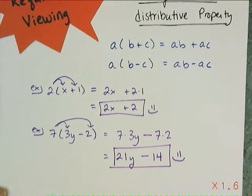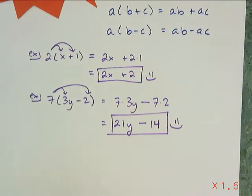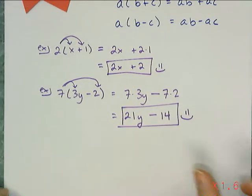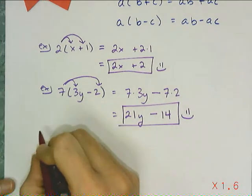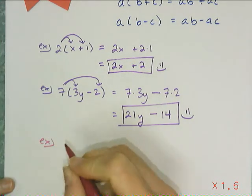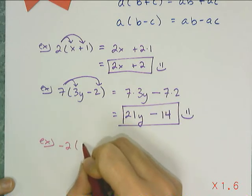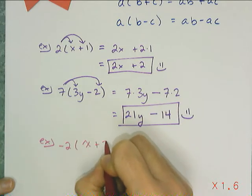Now let's look at the kinds of examples where, over my 16 years of teaching, I've seen people make mistakes. And it's sign mistakes. Because in algebra, it's not just about understanding the concept — a lot of it is the fine detail work. If you drop a sign someplace, your answer's wrong. So you have to be very careful and notice the details. For example: negative 2 times the quantity of x plus 7.